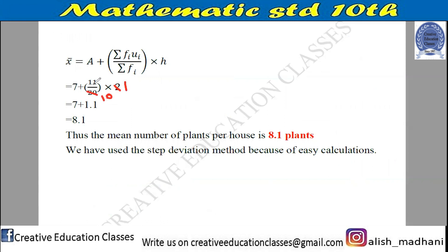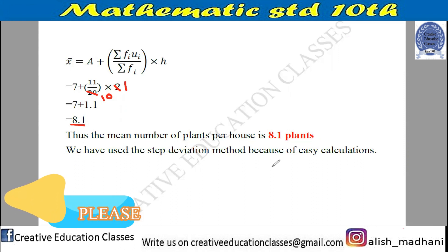Calculating: 11 × 2 = 22, divided by 20 = 1.1. So x̄ = 7 + 1.1 = 8.1. Thus the mean number of plants per house is 8.1 plants. We use the step deviation method because of easy calculations — in this method you can easily find the mean compared to other methods.